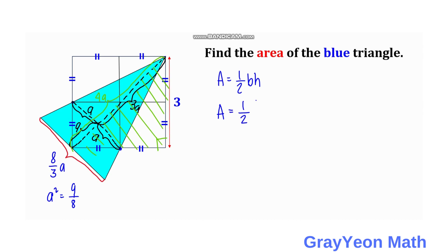And we have area is equal to one half times the base which is 8 over 3a times the height which is 4a, and we cancel this, this becomes 4.